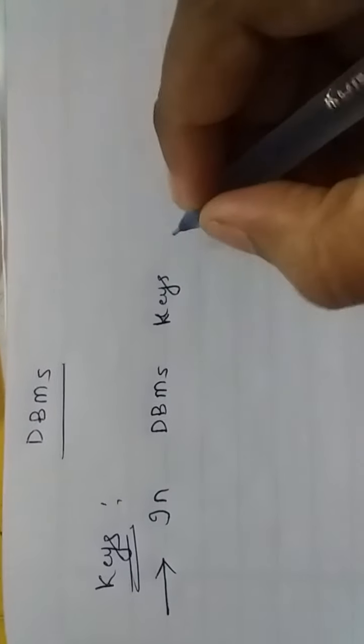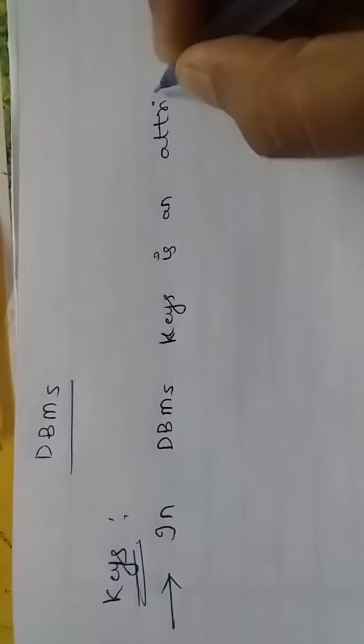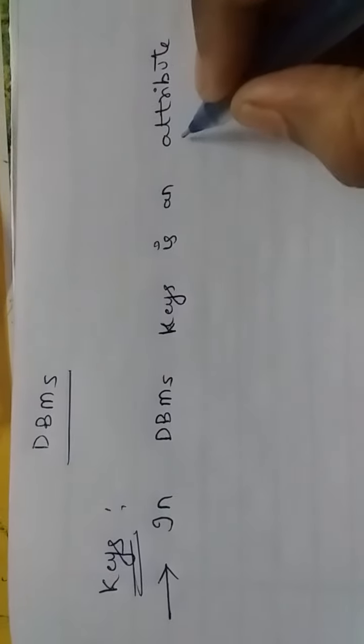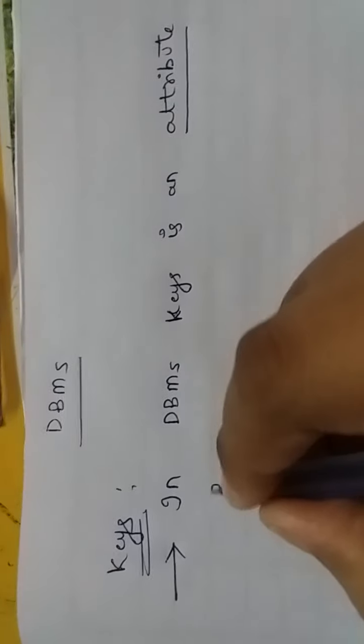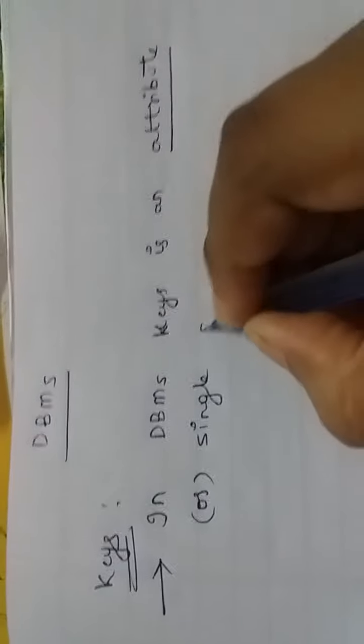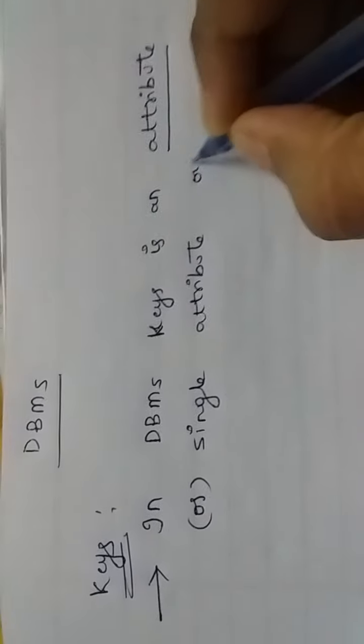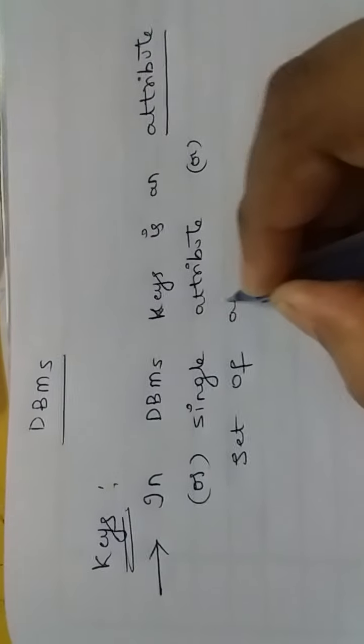Today's topic in DBMS is keys. What is meant by a key? How many types of keys are there? Let us discuss. In database management system, a key is an attribute — not only a single attribute, but it can be a single attribute or a set of attributes.